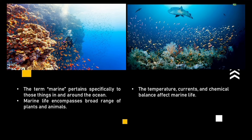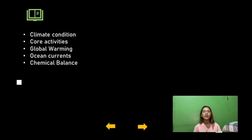The term marine pertains to things in and around the ocean or seawater specifically, while aquatic pertains to water in general. Marine life encompasses a broad range of plants and animals living in various ocean ecosystems throughout the world. Numerous things can affect marine life, including temperature, ocean currents, and the sea's chemical balance. Changes in ocean temperature can be attributed to factors including general climate conditions, the Earth's tectonic plates, volcanic activity, and global warming.